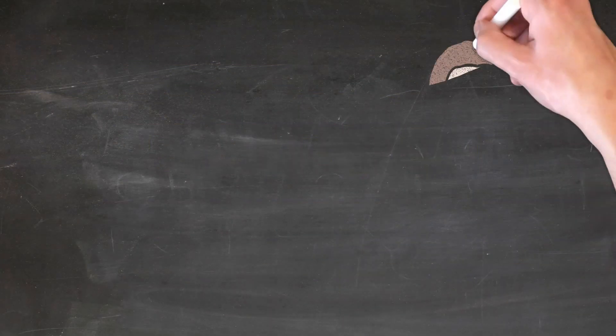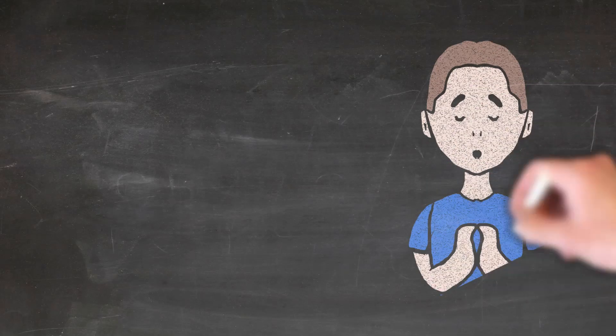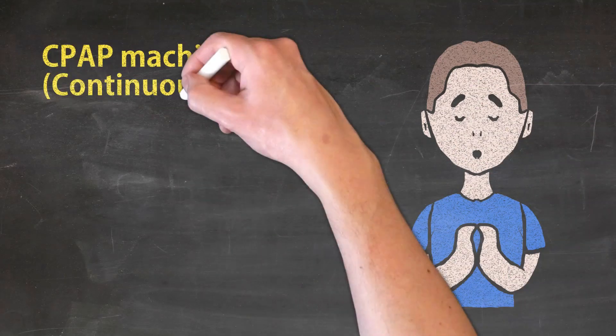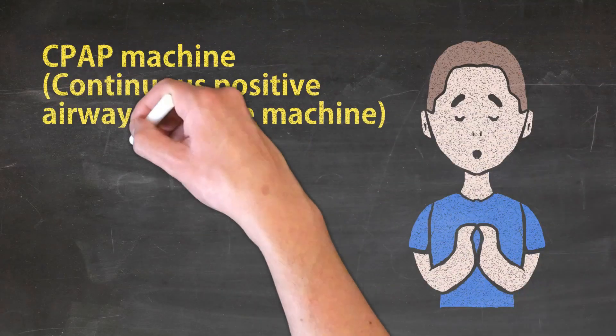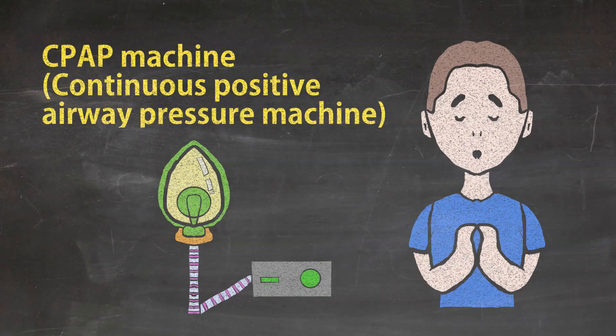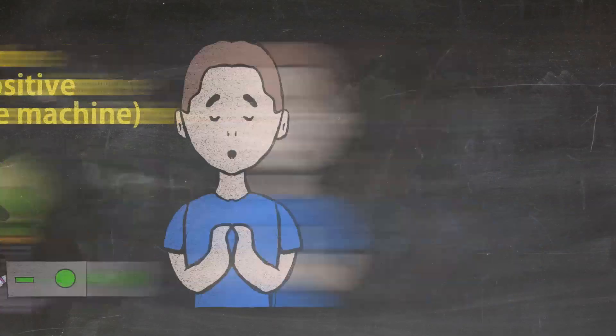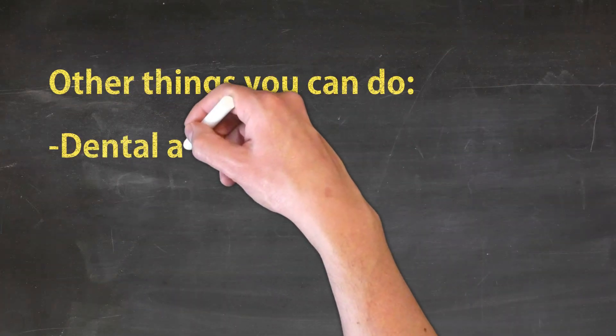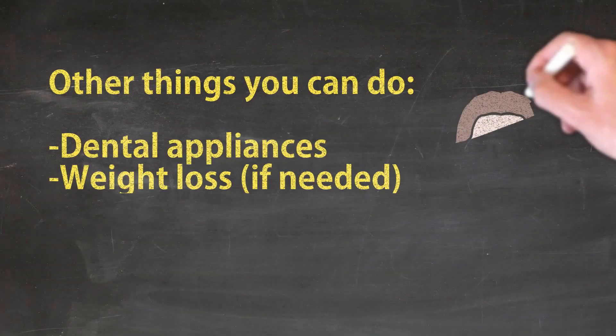Treatment. Mainstay of treatment for sleep apnea includes a CPAP machine. It consists of a mask and hose plus the machine to increase the air pressure in your throat to prevent it from collapsing. Other things which may help depending on specific situations are mouth appliances and also weight loss.